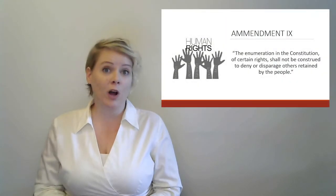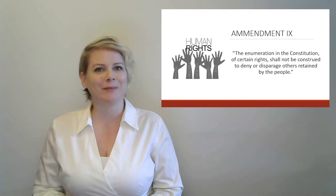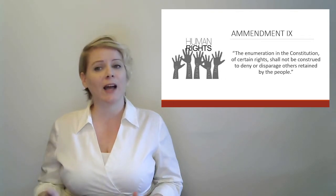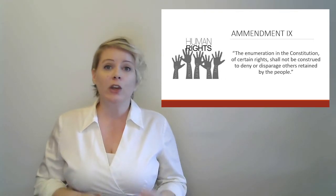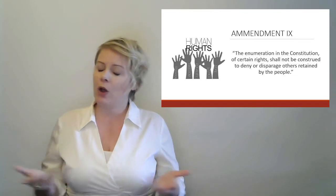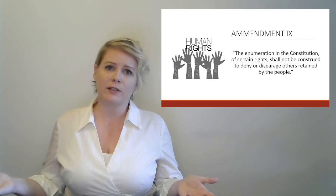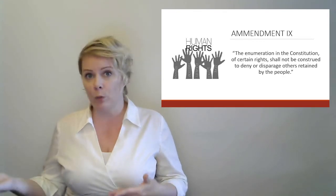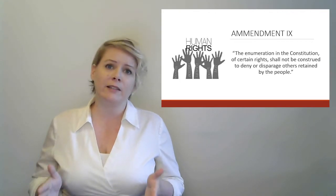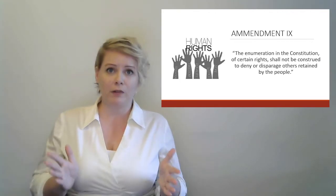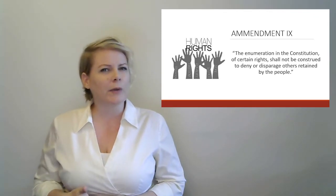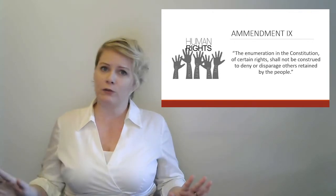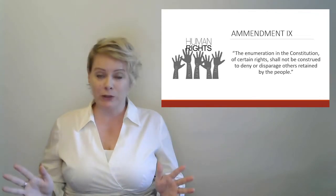Amendment Nine is also kind of complicated. What it says is that the enumeration in the Constitution of certain rights shall not be construed to deny or disparage others retained by the people. One thing it means is that the rights included in the Constitution are not all the rights you have — it's not comprehensive. There might be rights they haven't thought of yet or didn't write down. It also means that your rights can't infringe on another person's rights, and no one right is more important than any other right, especially when it comes to individual people.